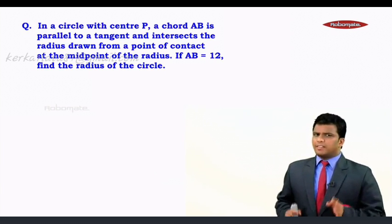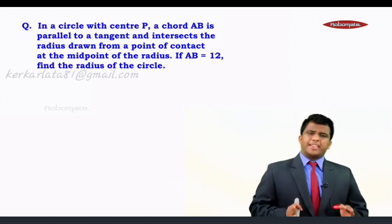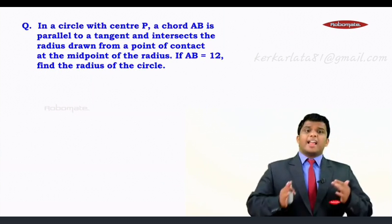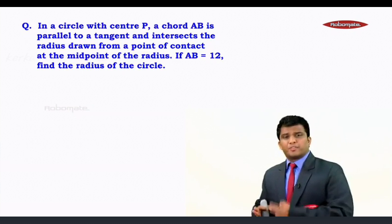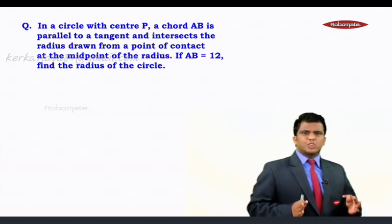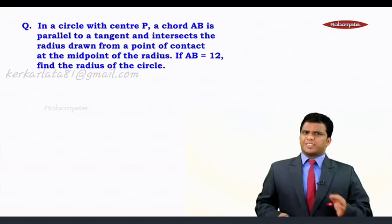So let's read the question properly. The question says, in a circle with center P, a chord AB is parallel to a tangent and intersects the radius drawn from the point of contact at the midpoint of the radius. If AB is 12 units, find the radius of the circle.